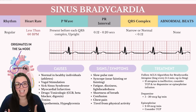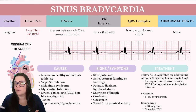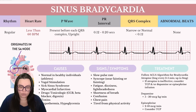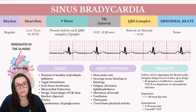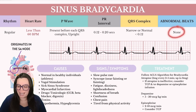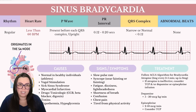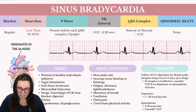Sinus bradycardia mirrors normal sinus rhythm in every aspect except when it comes to the heart rate. In sinus bradycardia, the rate is less than 60 beats per minute. Apart from the slower rate, all other characteristics align with a normal sinus rhythm — the rhythm remains regularly regular, our P wave is going to be present before each QRS complex and upright, our PR interval and QRS complex should remain within normal, and we're not going to see any abnormal beats.